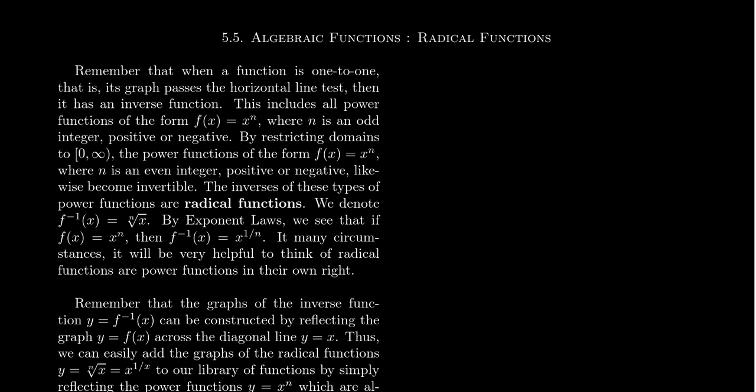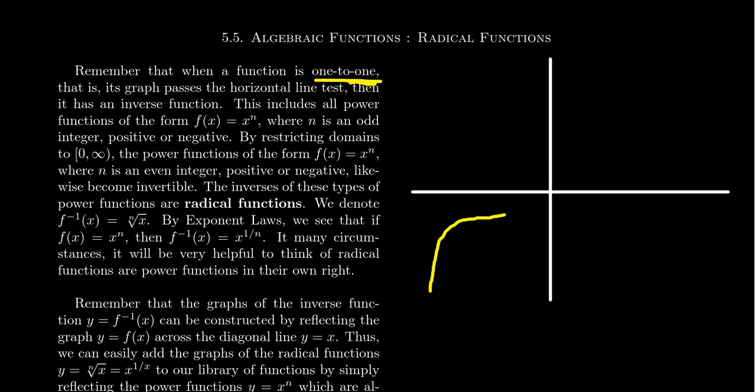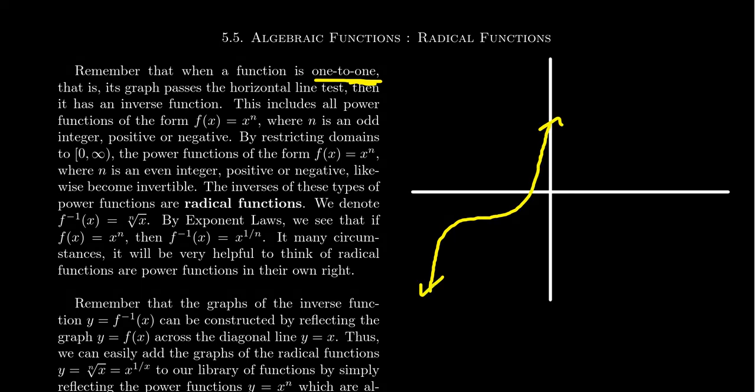To talk about inverse functions, there's a few things we have to remember. A function is one-to-one when its graph passes the horizontal line test. For example, if we sketch a graph with x and y axes and draw a one-to-one function like this, whenever you draw a horizontal line, it'll intersect the graph at most one place. This is an example of a function passing the horizontal line test. This is in contrast to, say, your standard parabola, which fails the horizontal line test because there can be more than one place where the horizontal line hits the graph. There is a way of fixing this, which we'll see later in this lecture.